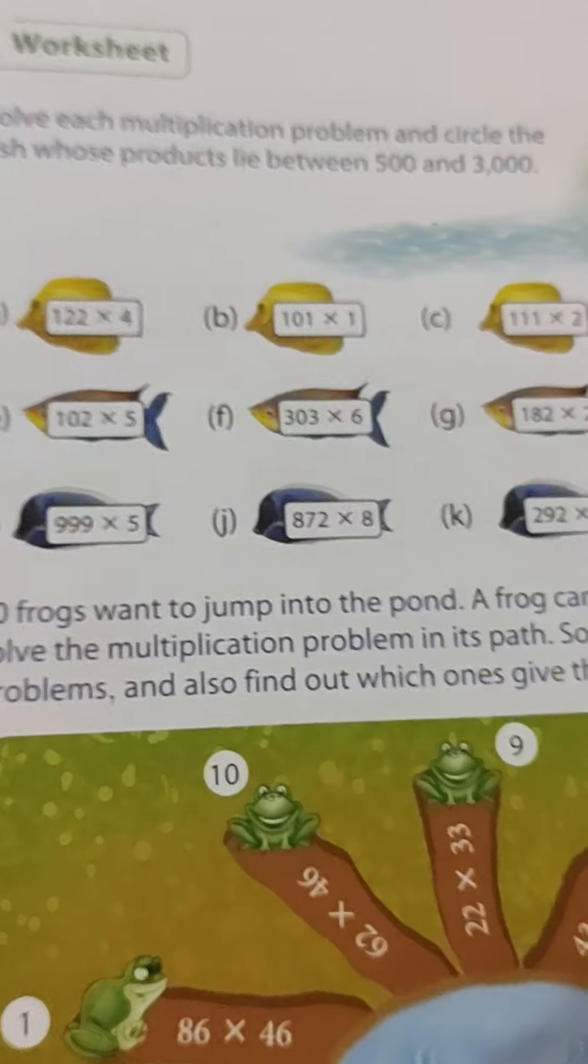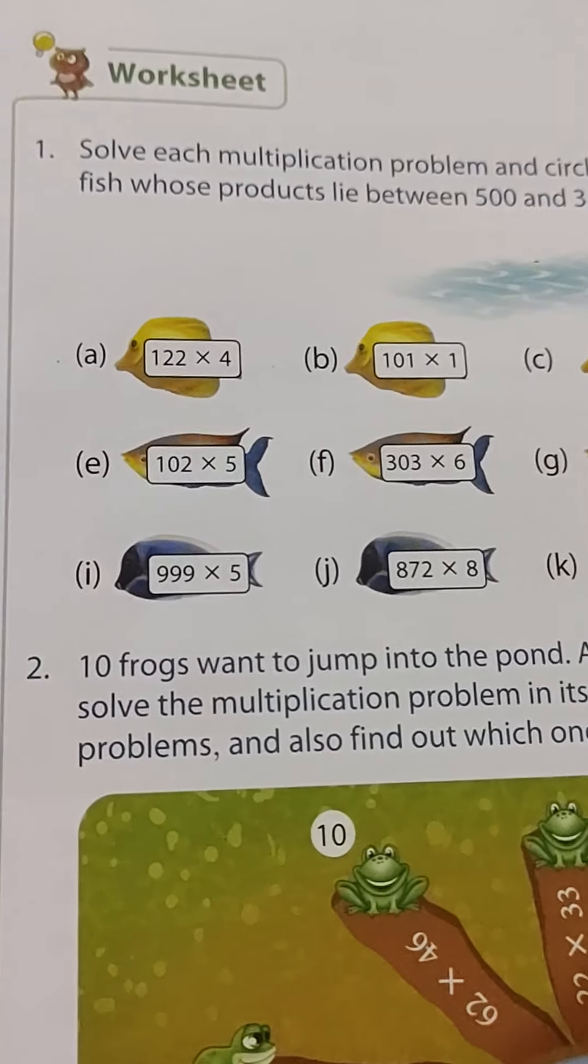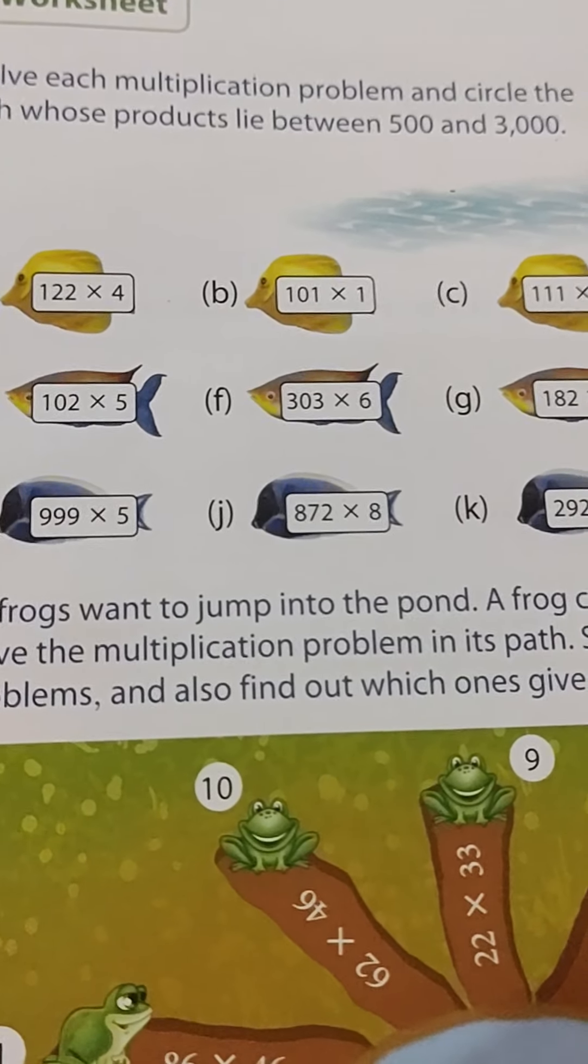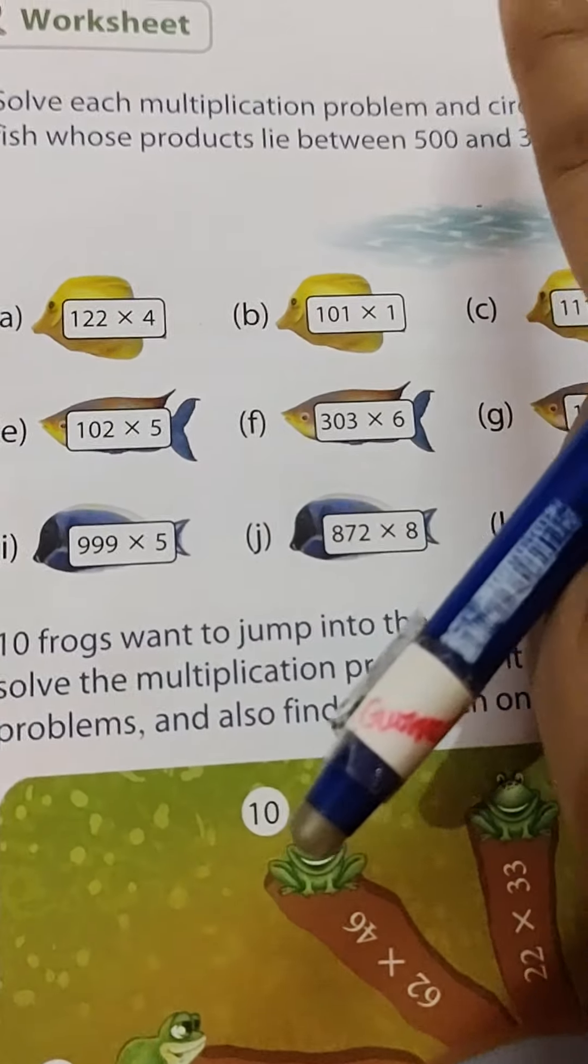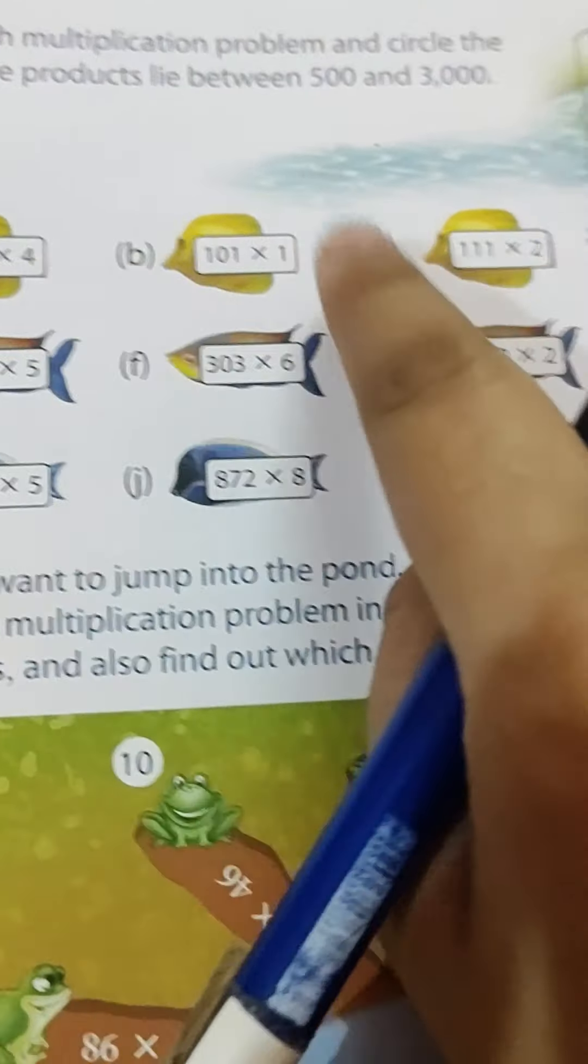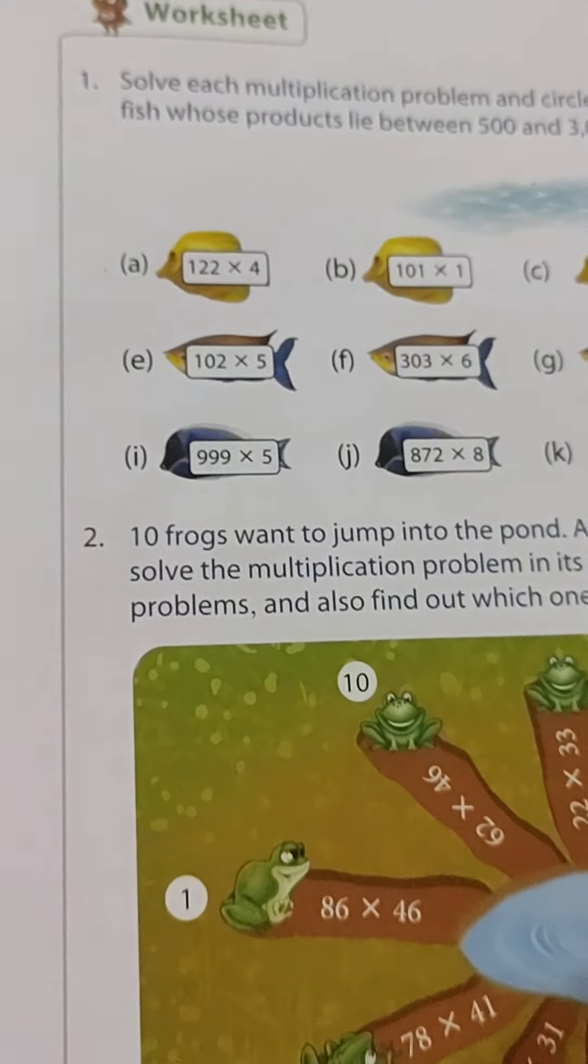This worksheet you will be doing in your notebook. Solve each multiplication problem and circle the fish whose product lies between 500 to 3000. So 500 or 3000 ke beech mein jis jis ka product ho ga usko aapko circle karna hai.